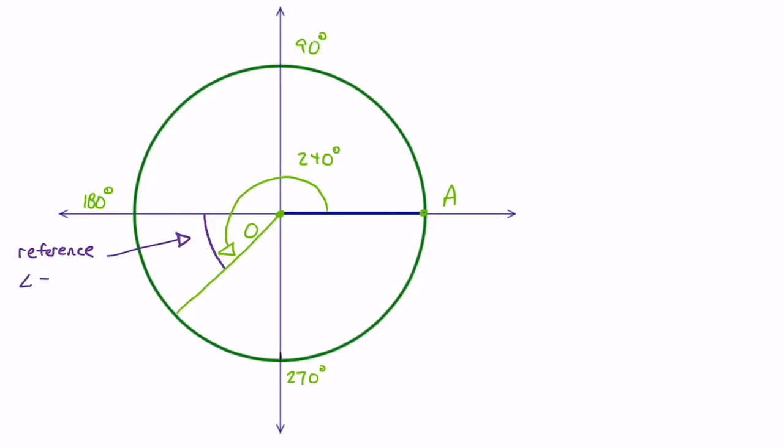The reference angle is always the acute angle between the terminal arm and the x-axis. So here, I know the terminal arm's at 240 and the x-axis is 180 degrees. So to find that little reference angle, I've got to subtract: 240 take away 180, and I get the reference angle is 60 degrees.